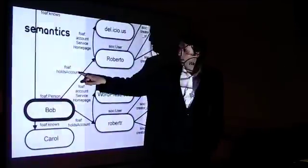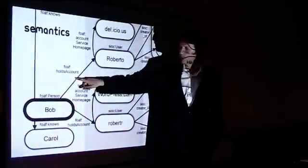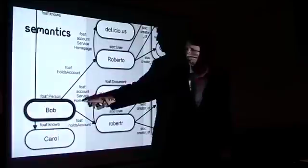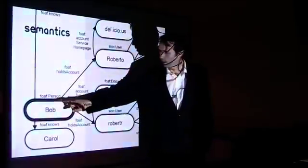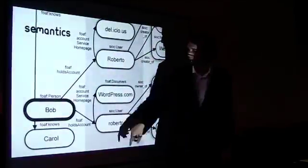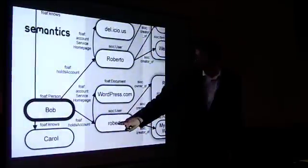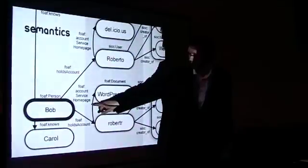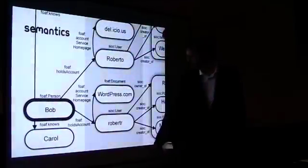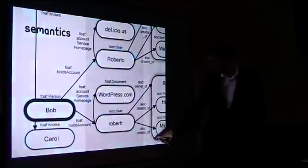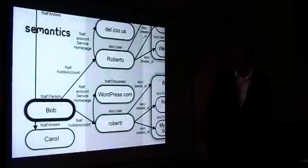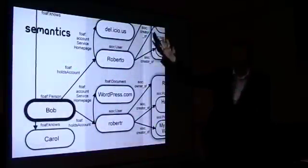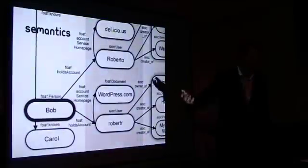And everything kind of exists of triples. You've got a subject. You've got some kind of predicate or property which connects them together. And you've got an object that it's pointed to. So you kind of have all of these statements which are composed of three things. Bob holds an account which is Roberto. Robert R is an account that has an account service homepage which is WordPress.com. Robert R is the creator of this post. It's gone off the screen there. And so on. And you can have a big list of these statements and it can be encoded in XML or RDF or whatever.